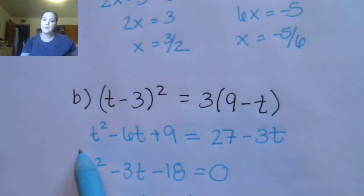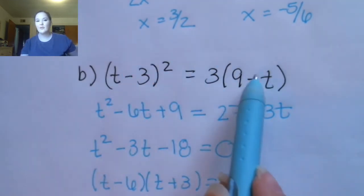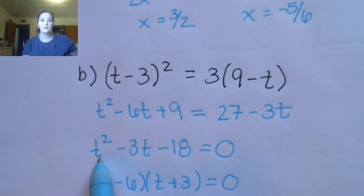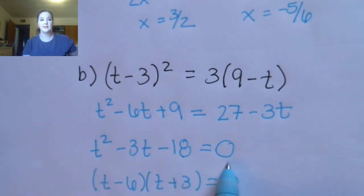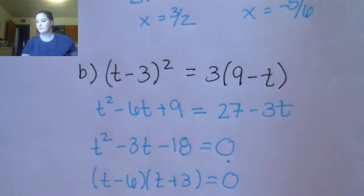The main point here is that you need to simplify everything and put the equation into standard form — with your terms in descending order on the left and 0 on the right — before you start factoring.